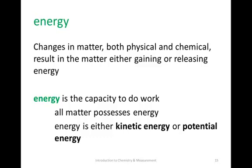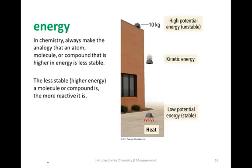Energy can be in the form of kinetic energy or potential energy, and the sum of those two equals the total energy of the system. To discuss the difference between potential and kinetic energy, we look at a classic physics example of a ball rolling down a hill or a weight on top of a building falling. At the top of the building, a 10-kilogram weight has potential energy — energy that is due to position.